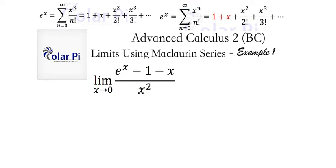And so to get the numerator of the expression that we want to take the limit of here, what we ought to do is subtract one and x from both sides of the infinite sum that expresses e to the x. Doing that, we get an infinite sum that expresses e to the x minus one minus x, namely x squared over two factorial plus x cubed over three factorial plus dot dot dot.